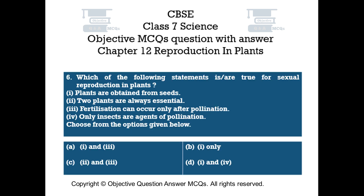Question number 6. Which of the following statements are true for sexual reproduction in plants? 1. Plants are obtained from seeds. 2. Two plants are always essential. 3. Fertilization can occur only after pollination. 4. Only insects are agents of pollination. Choose from the options: Option A: 1 and 3. Option B: 1 only. Option C: 2 and 3. Option D: 1 and 4.